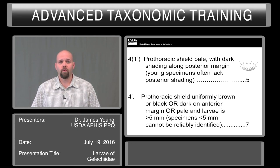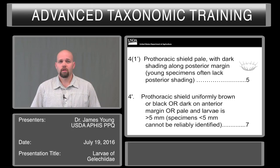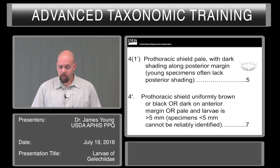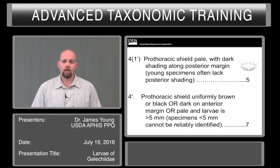If you went to couplet 4 instead of couplet 2, you'll be looking at the pronotal shield and its markings. If it has dark markings on the posterior edge and the specimen appears to be mature, you would go to couplet 5. If it's uniform or dark on the anterior margin, or the specimen is particularly small, you can try to run it through couplet 7.